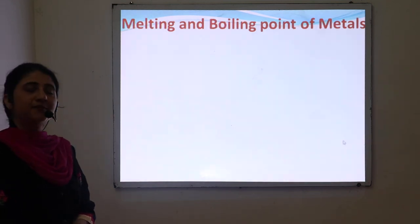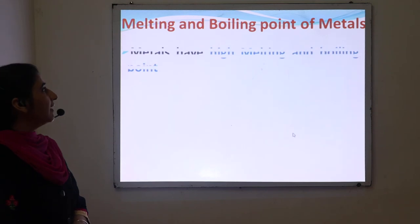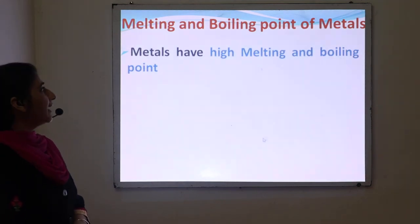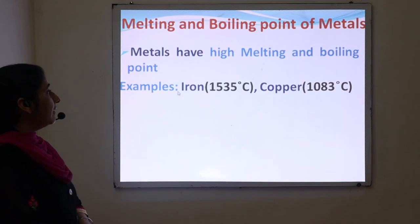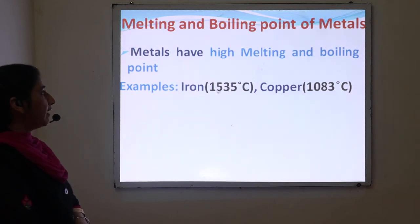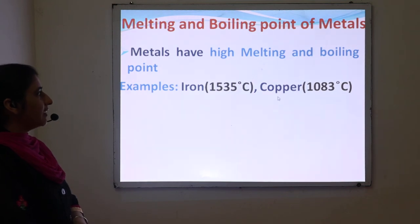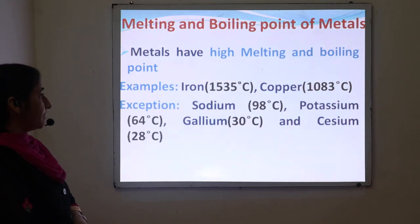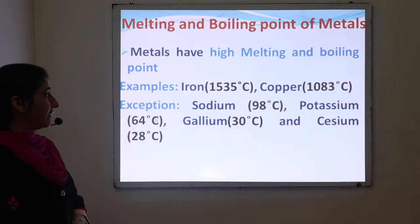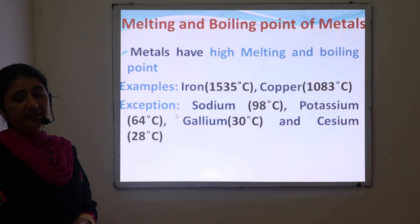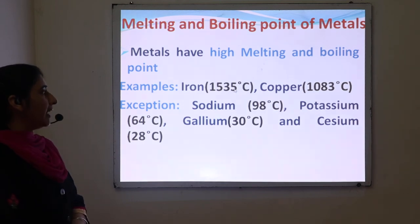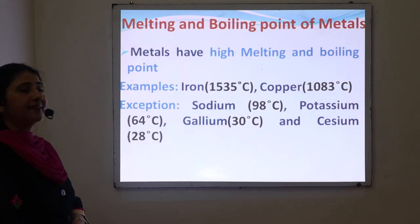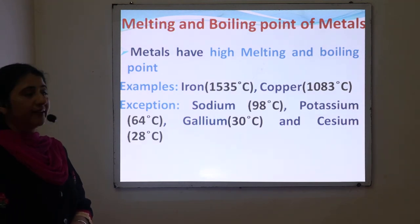The last physical property is melting and boiling point. Metals have high melting and boiling points. For example, iron has a melting point of 35 degrees Celsius, whereas copper has a melting point of 1083 degrees Celsius. Exception: some metals have low melting and boiling points — for instance, sodium has a melting point of 98 degrees Celsius and potassium has a melting point of 64 degrees Celsius.